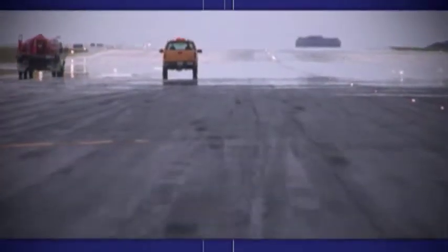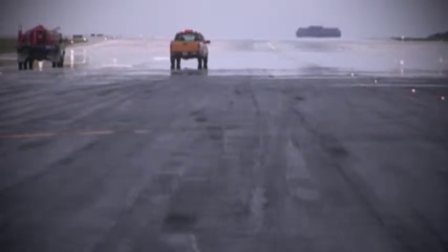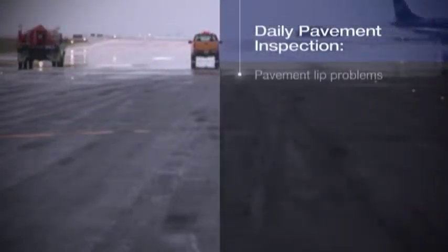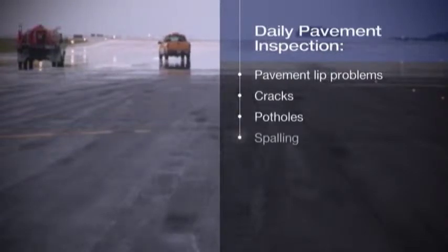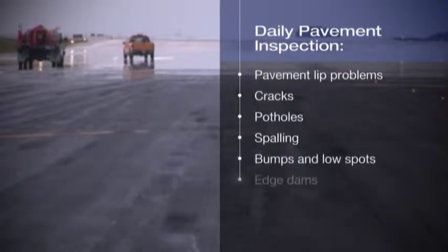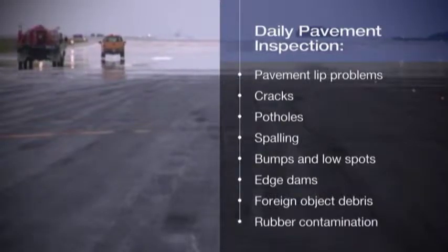The condition of pavement surfaces is an important part of airport safety. At the minimum, a daily inspection should be performed of all paved areas used by aircraft. During this inspection, you should look for pavement lip problems, cracks, potholes, spalling, bumps and low spots, edge dams, foreign object debris, and rubber contamination.